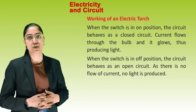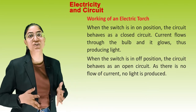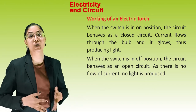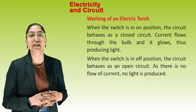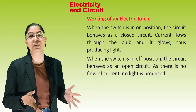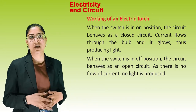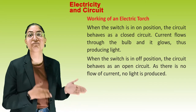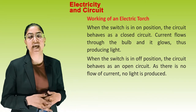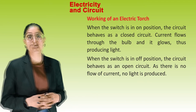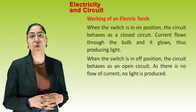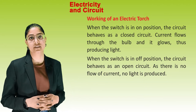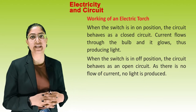Working of an electric torch: when the torch is in the on position, the circuit behaves as a closed circuit. Current flows through the bulb and it glows, thus producing light. When the switch is in the off position, the circuit behaves as an open circuit. As there is no flow of current, no light is produced.